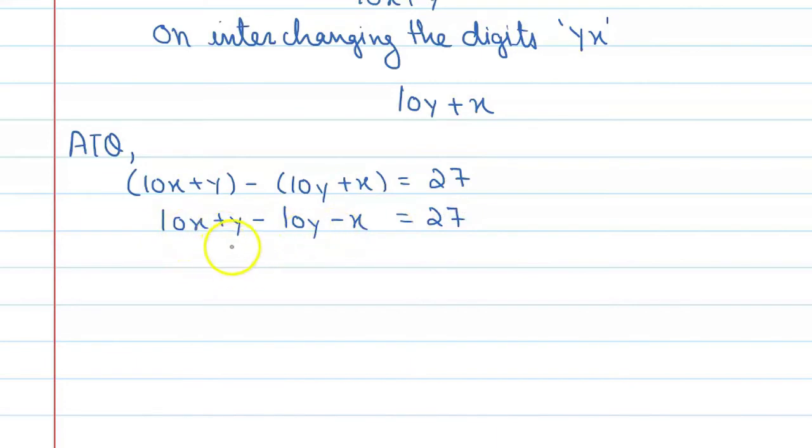Now 10x minus x is 9x, y minus 10y then you will get minus 9y equal to 27. If you take 9 common then you will get x minus y equal to 27 divided by 9, and here you will get x minus y is equal to 3.